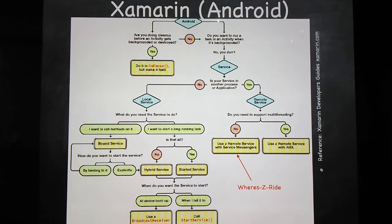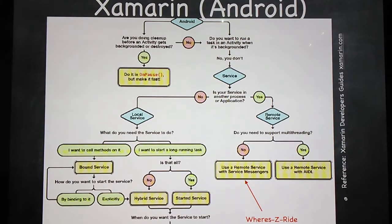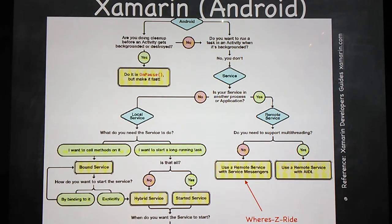On the Android side, you have two options: you can have a remote service or a local service. The difference is that a local service resides within the same process as your application; a remote service resides in a different process. I decided to go for a remote service — the reason being, if I can take the tight code that grabs the GPS data and sends it to the server and put it in a service by itself, the cost is 4 megabytes of RAM. I can keep my 40-meg app all by itself, and when it comes time to be killed, the OS would probably kill my application but leave my service.